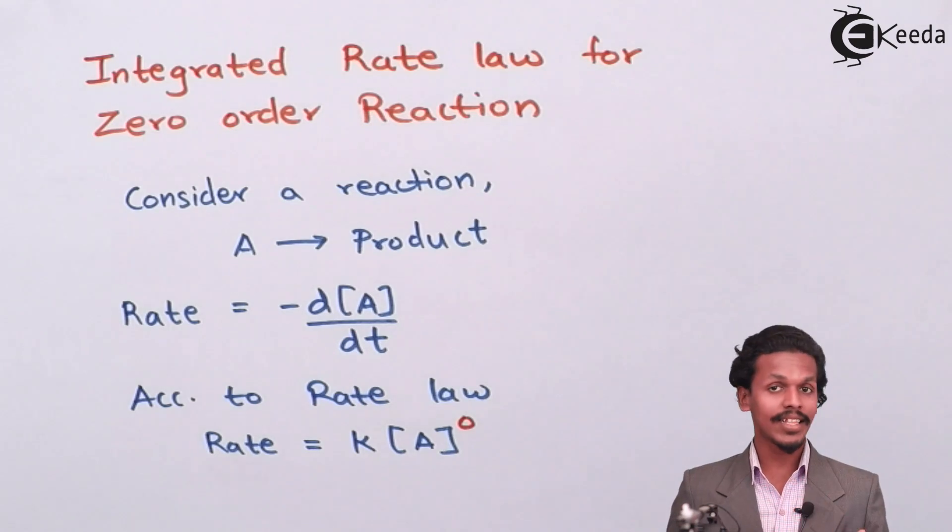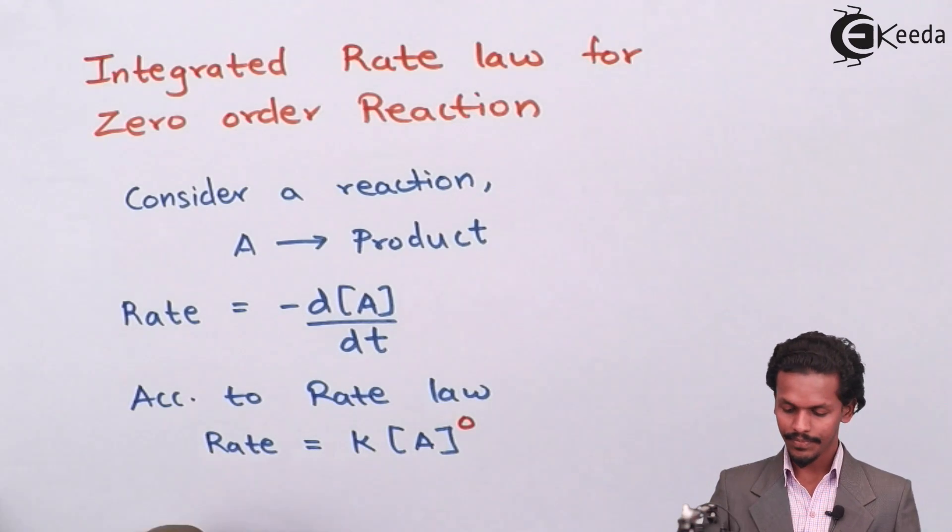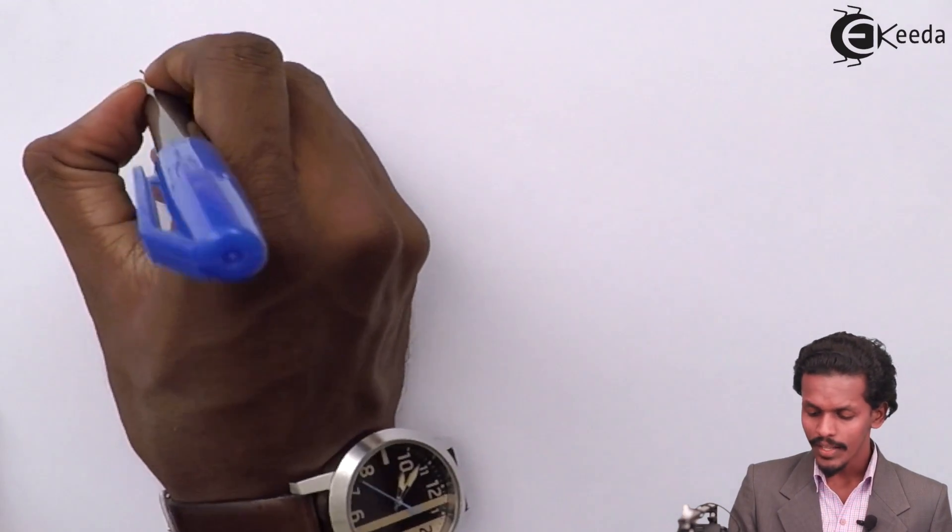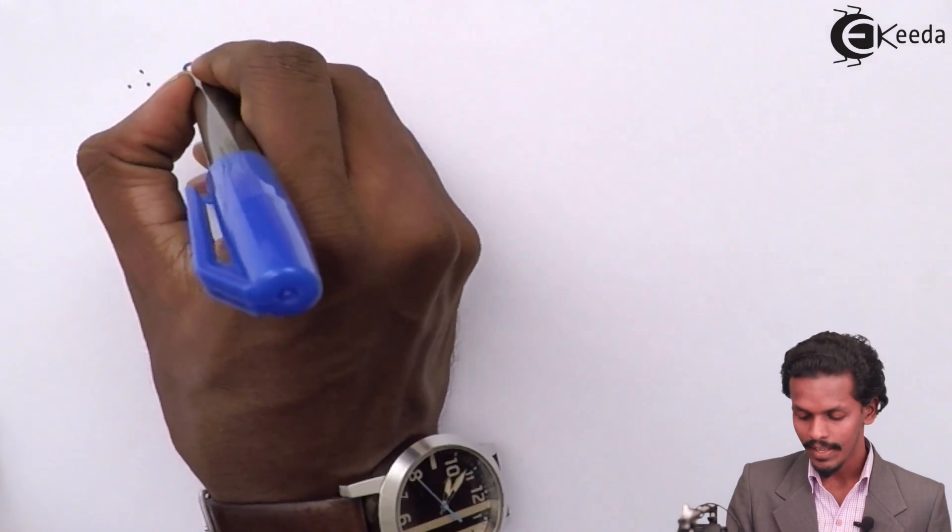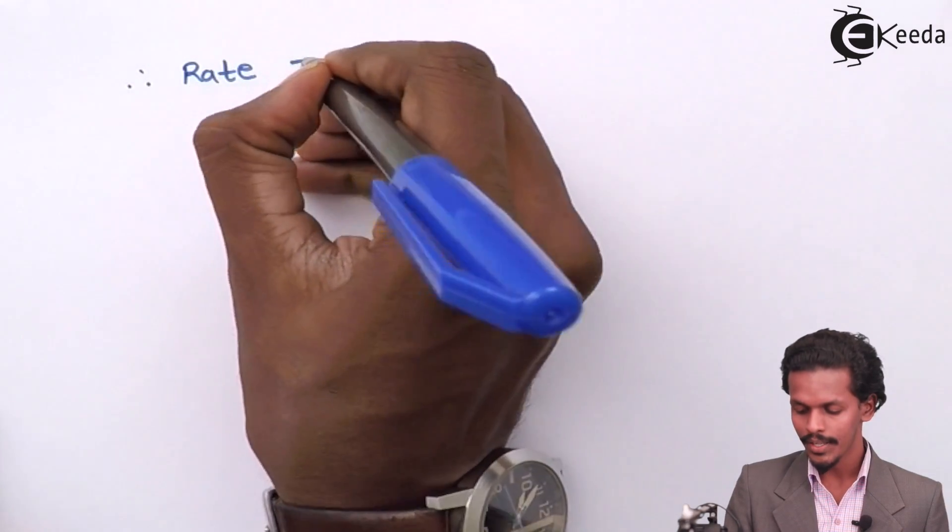Let us see what else we can do with this. Now the equation can be written as rate equals K.